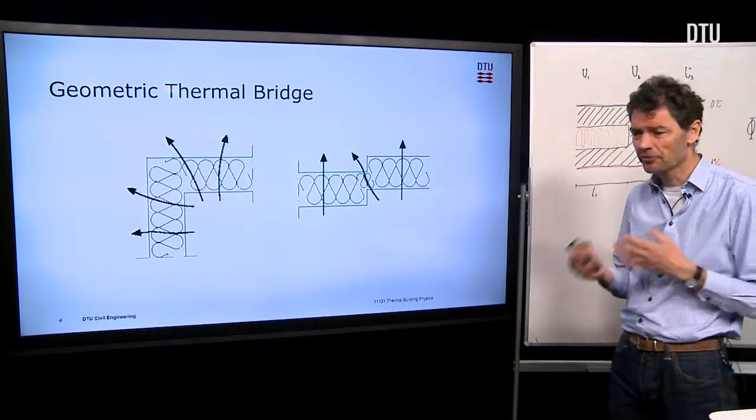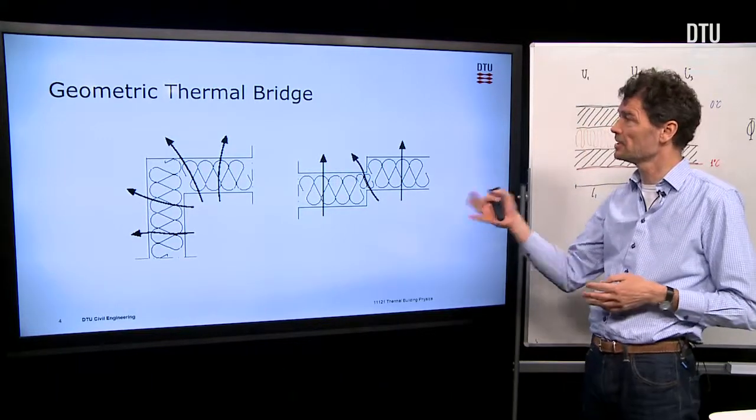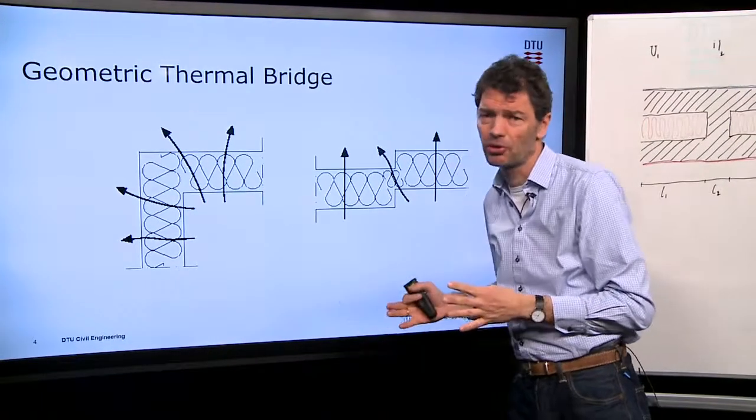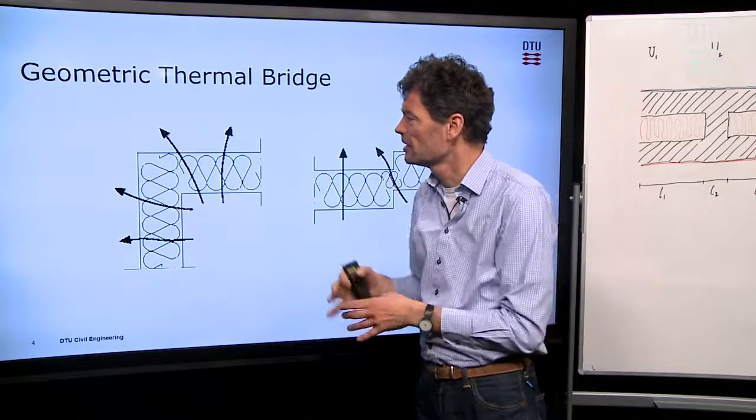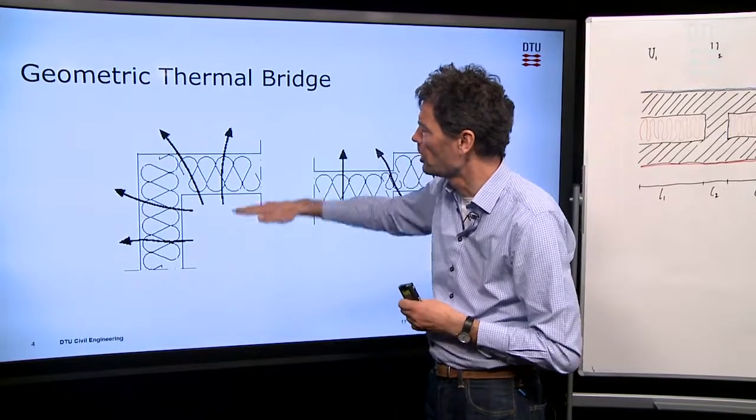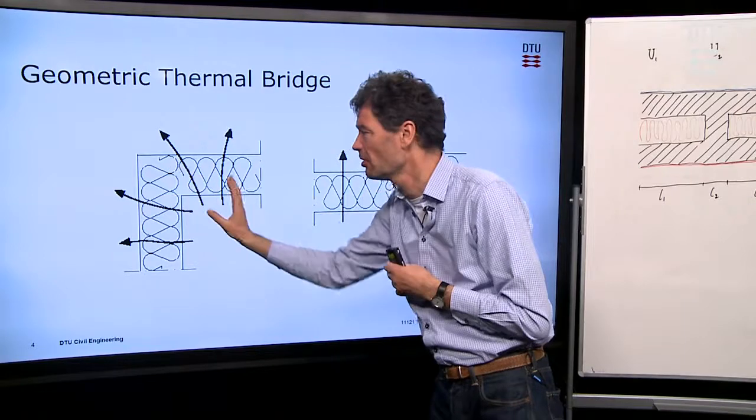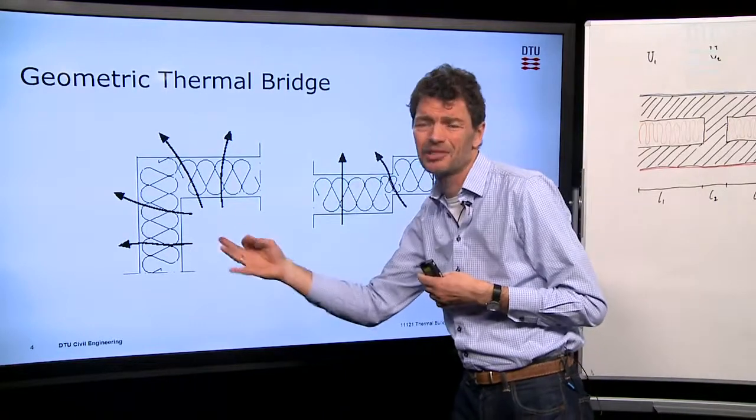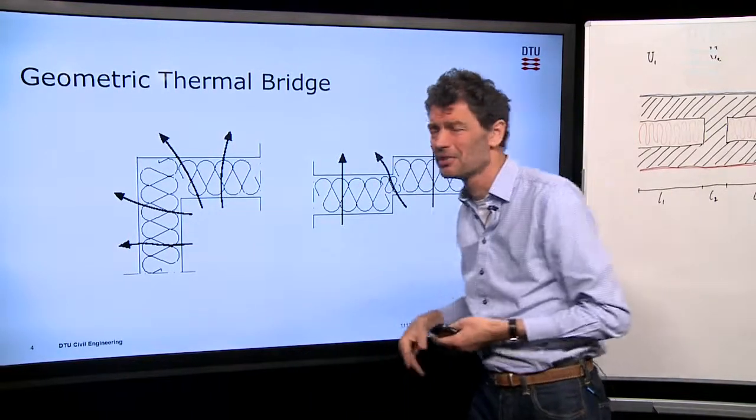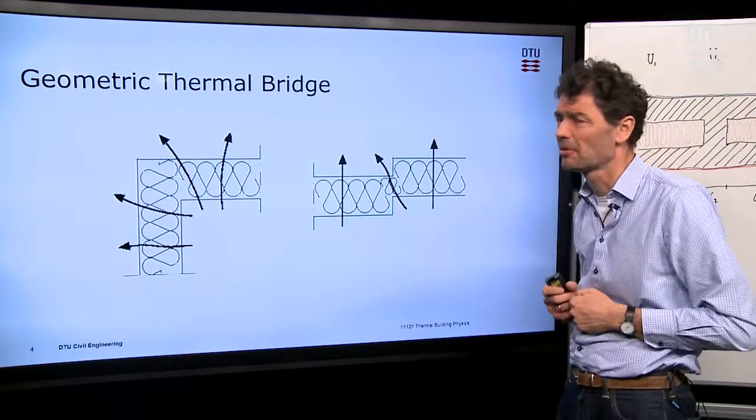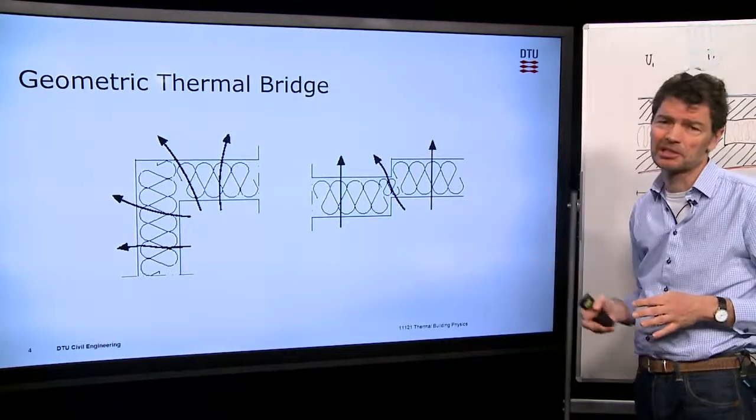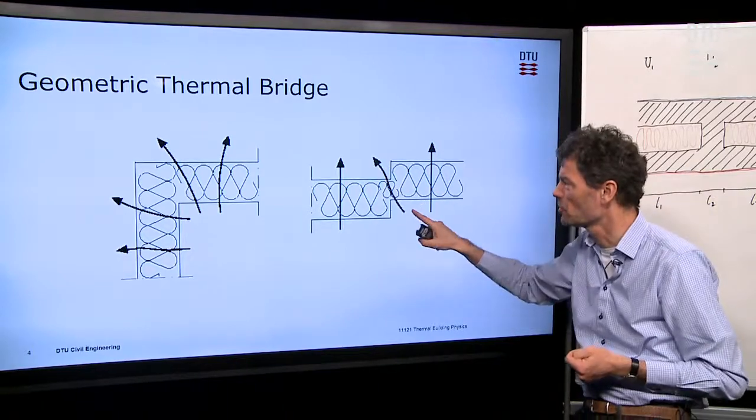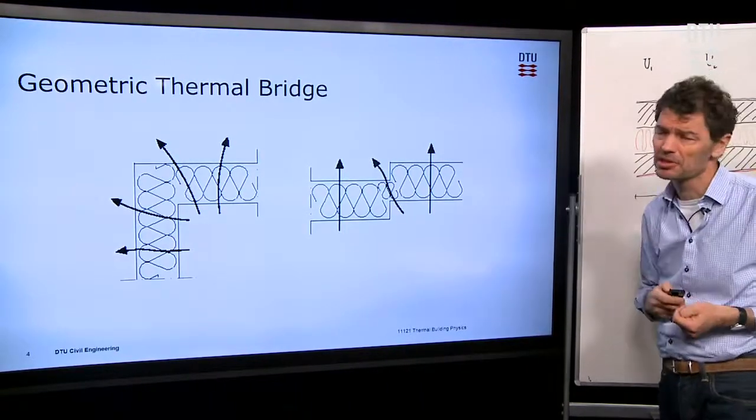There are four types of thermal bridge as we normally look upon it. The first type is the geometrical thermal bridge. Here it's the same material that passes around the corner of a building, but just the fact that the heat flow can go one-dimensionally through some part of the wall, but as it comes close to the corner, the heat will also have a possibility to take the path through the corner itself, and that leads to an extra heat loss.